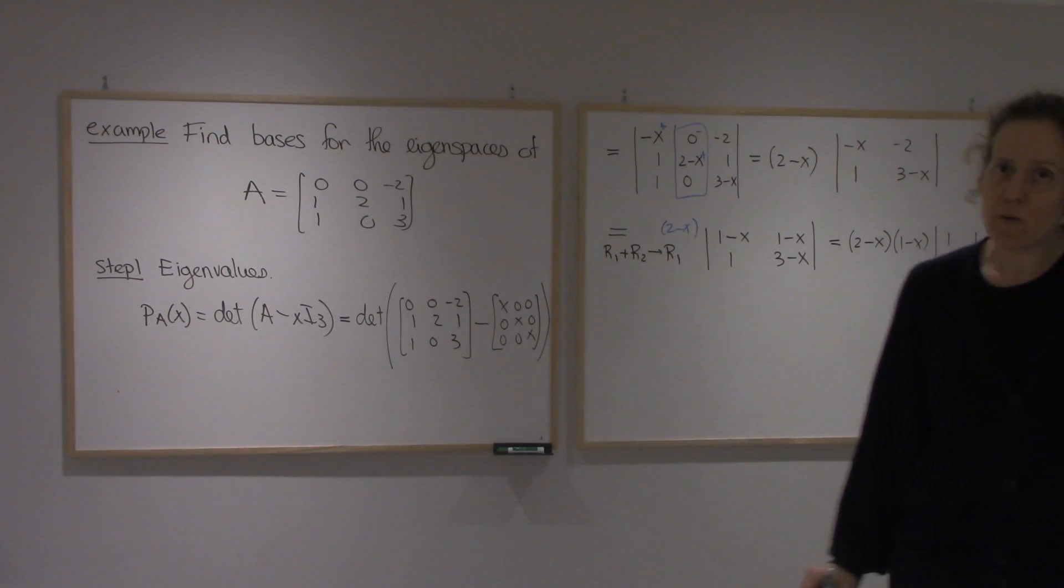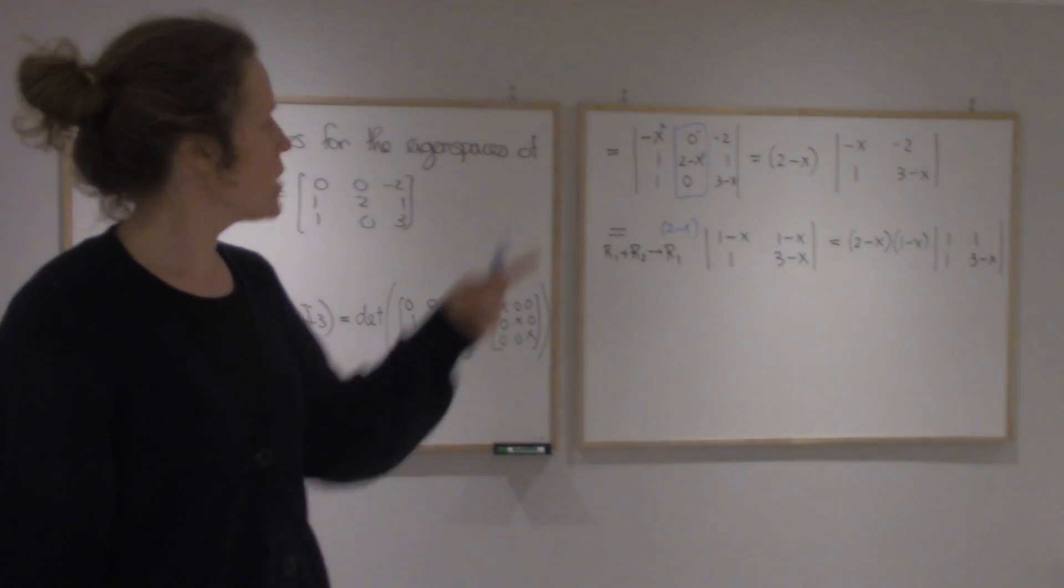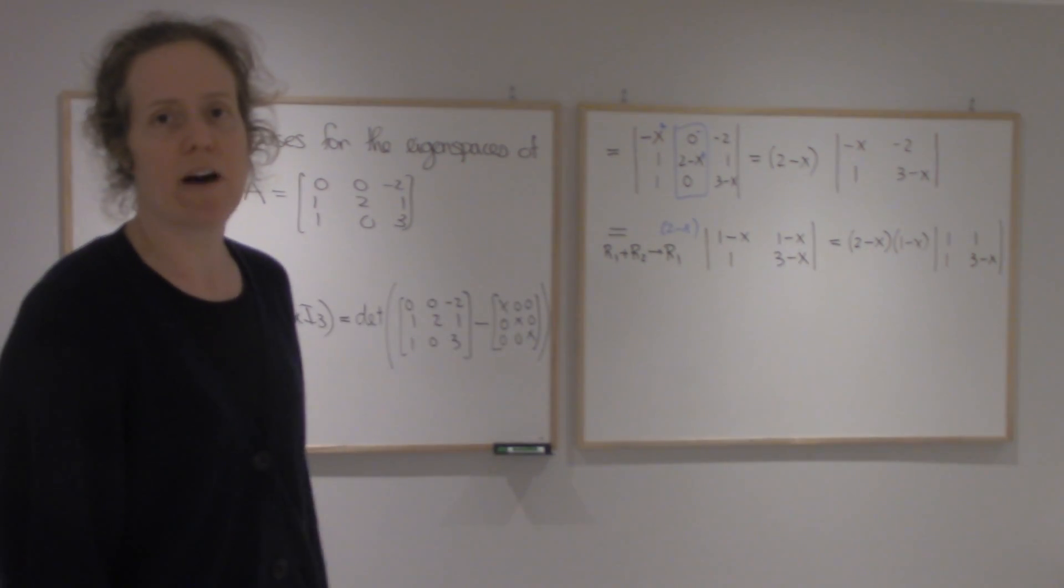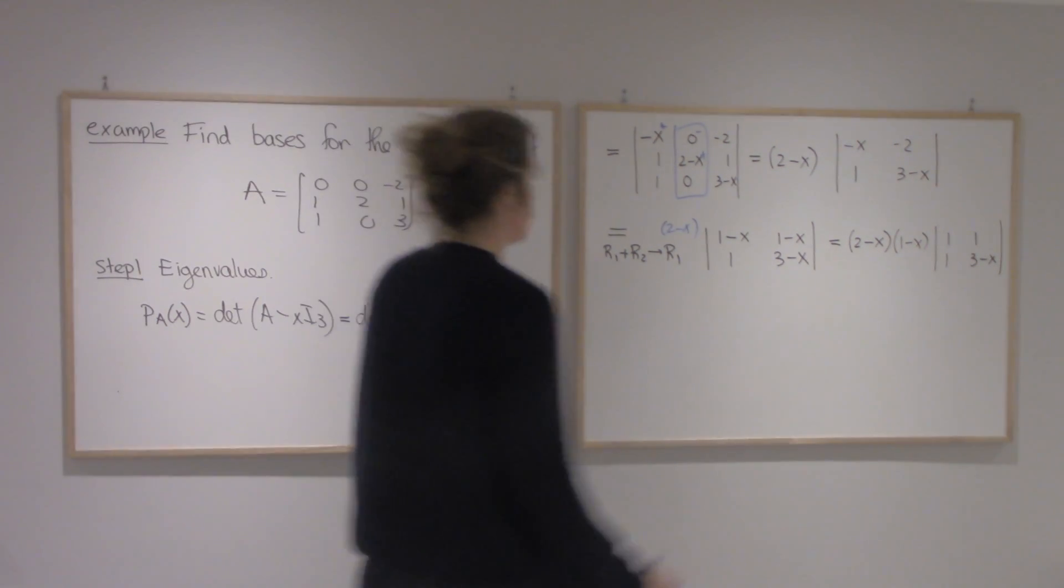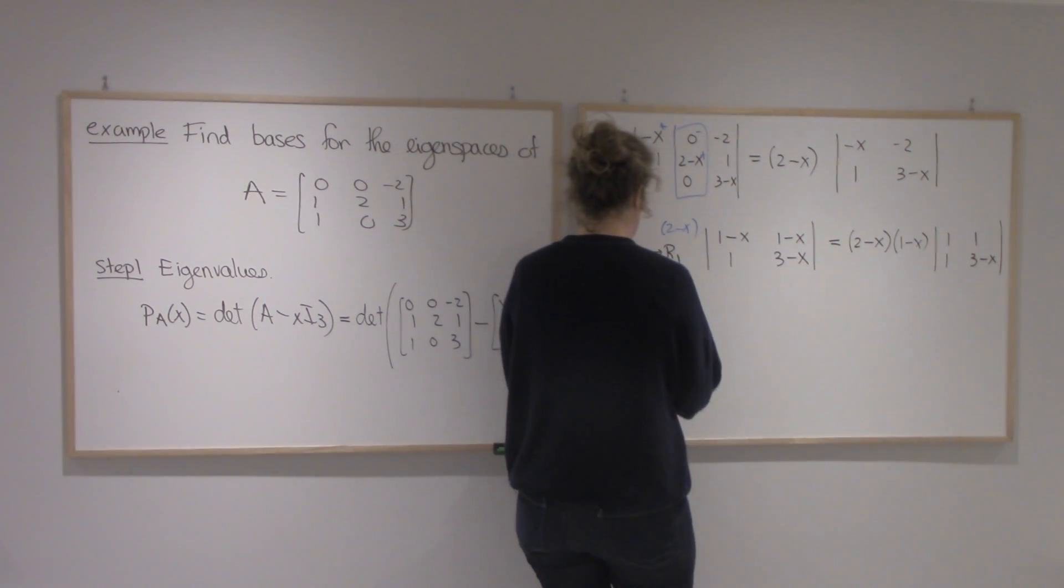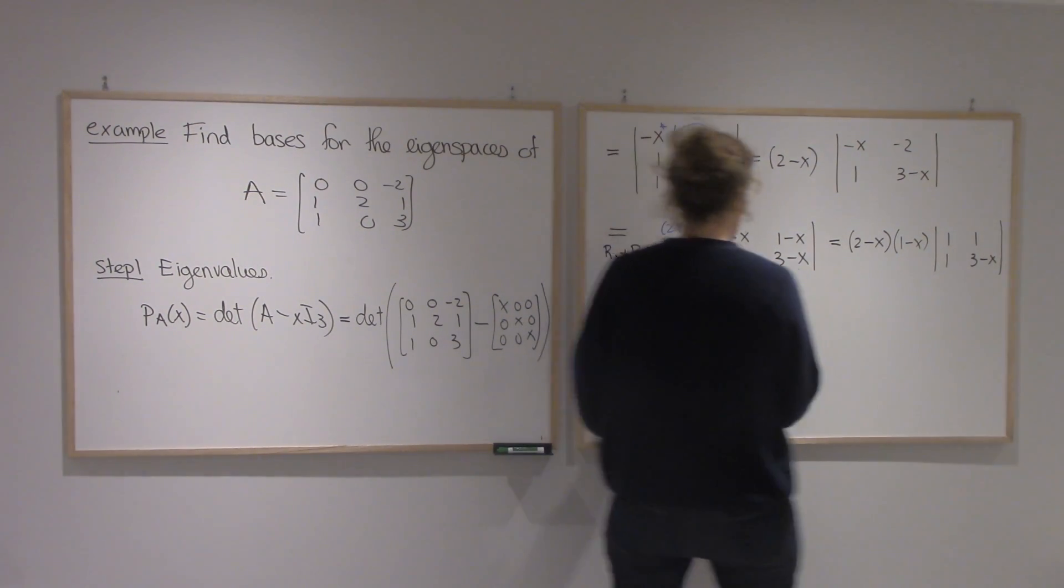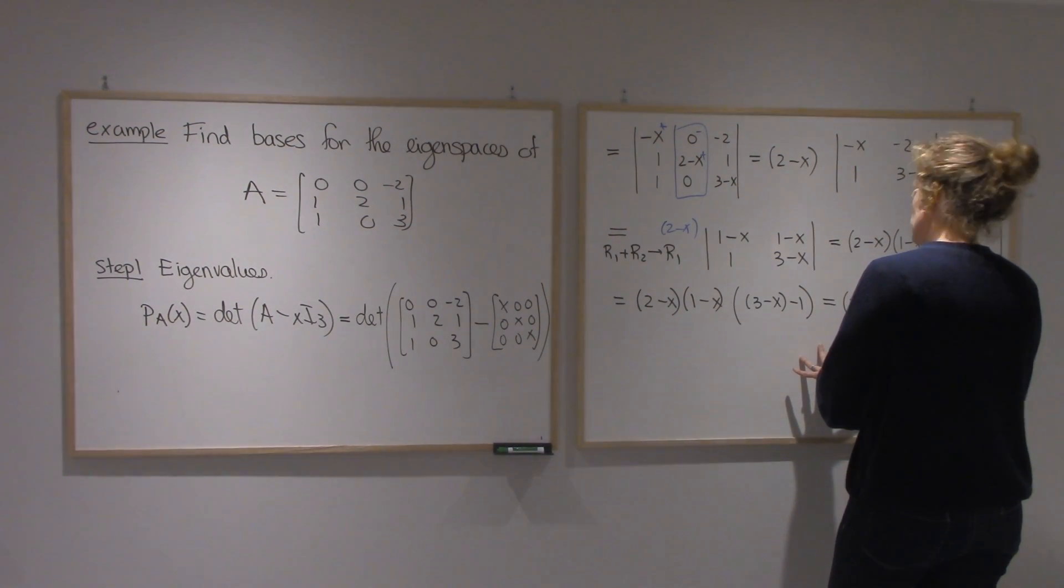So I already have two factors of my characteristic polynomial. Notice I already know that 2 is going to be an eigenvalue, and 1 will be an eigenvalue, and I need to figure out what that third linear term will be. And I'm going to get 3 minus x minus 1. So I'm going to get 2 minus x squared, 1 minus x.